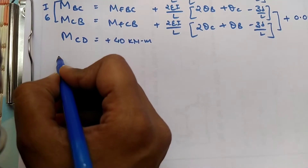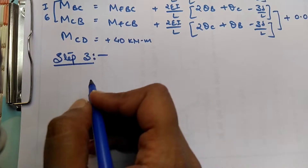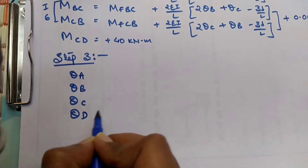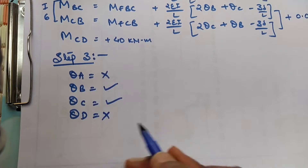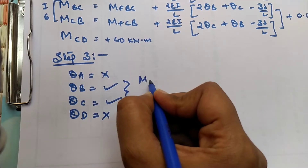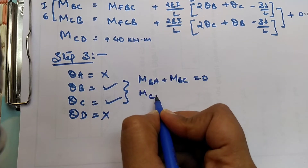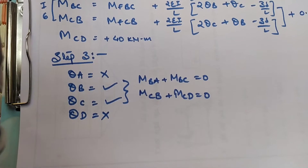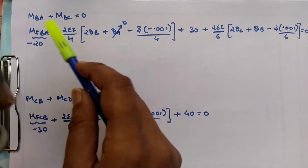Step three is identifying the compatibility or equilibrium equations. We have unknowns θA, θB, θC, and θD, of which θB and θC need to be calculated. For two unknowns, we need two compatibility equations. At a support, the left-side moment and right-side moment must equal zero, giving us two equations to solve.